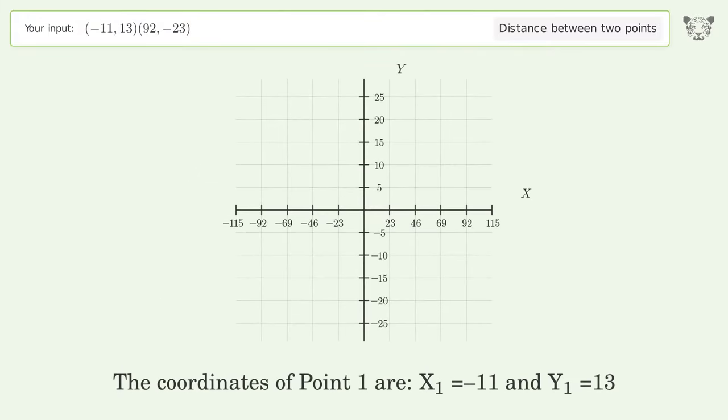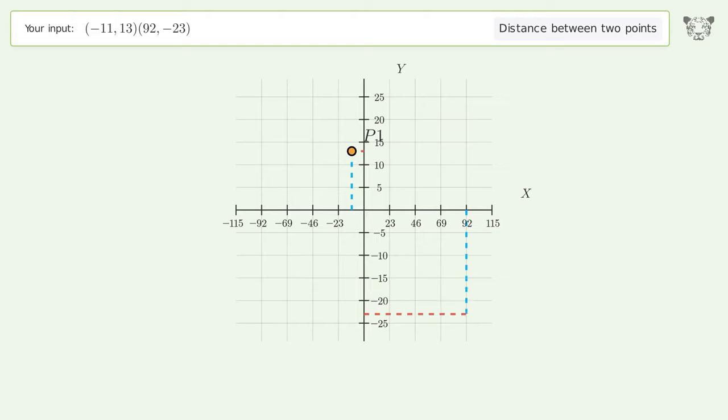The coordinates of point 1 are x1 equals negative 11 and y1 equals 13. The coordinates of point 2 are x2 equals 92 and y2 equals negative 23. d is the distance between the two points.